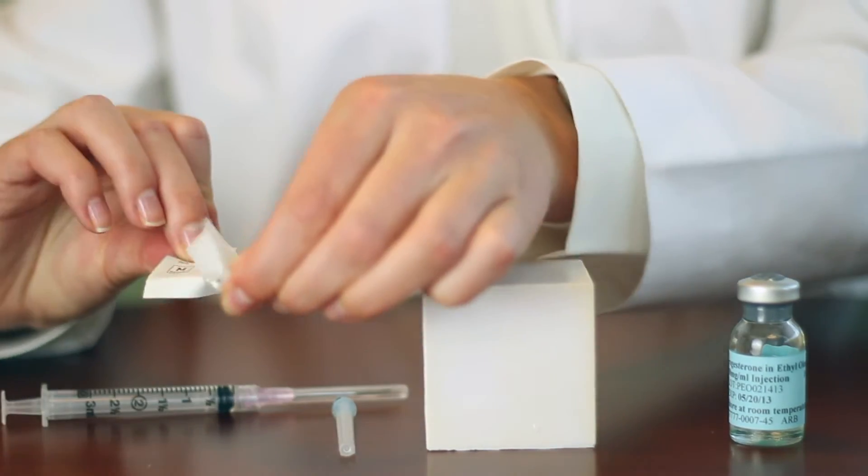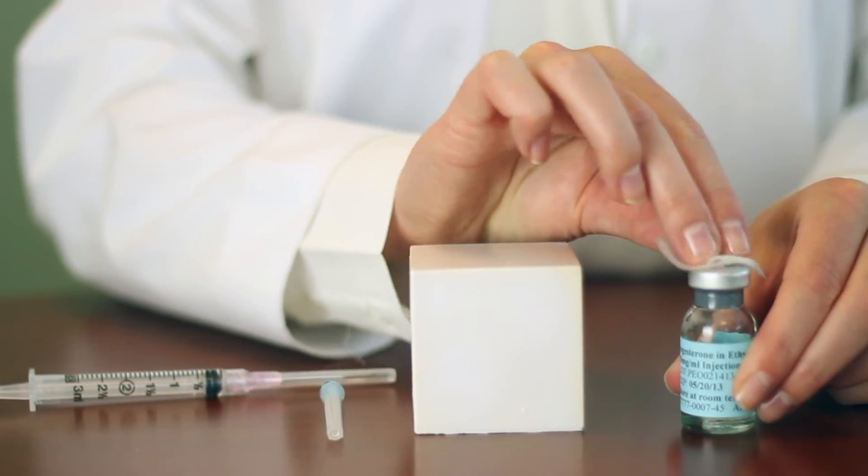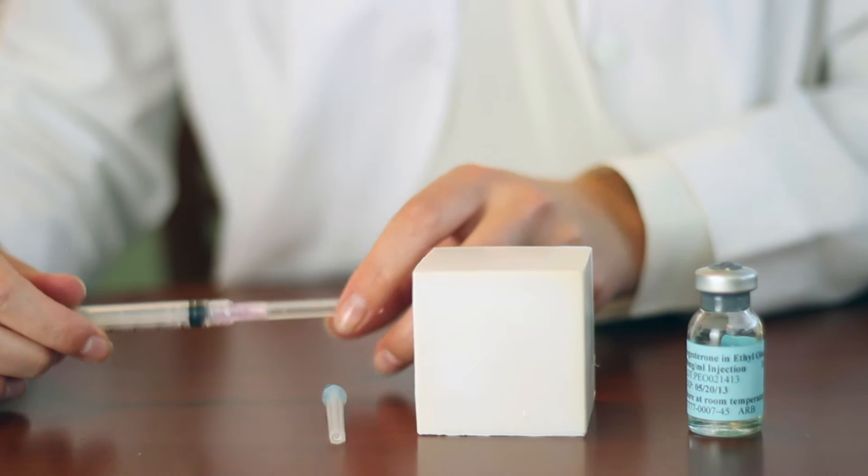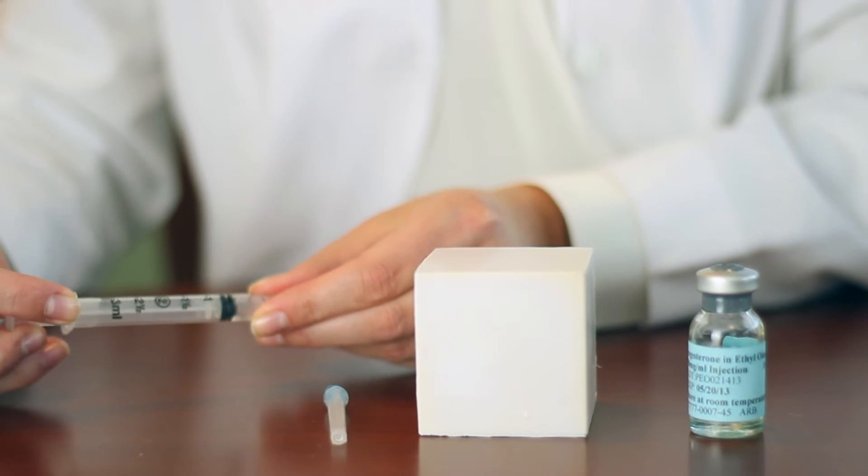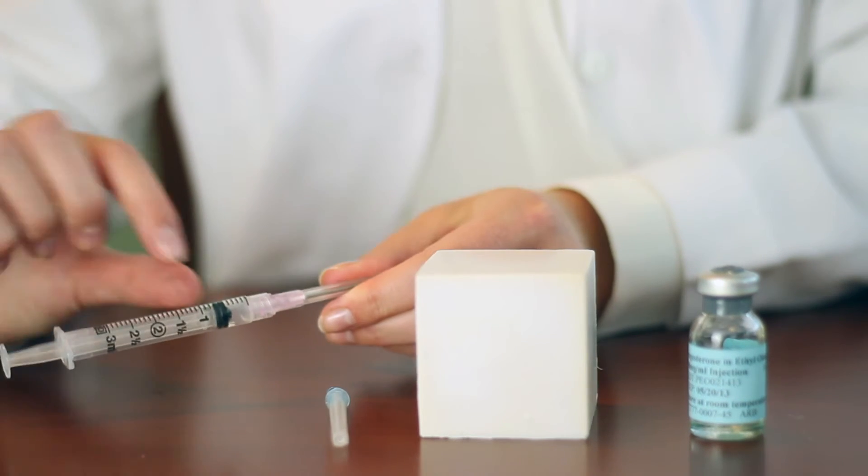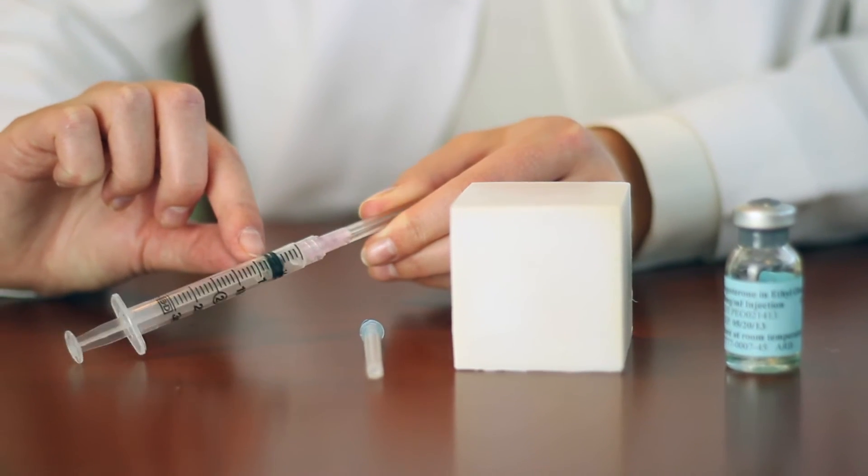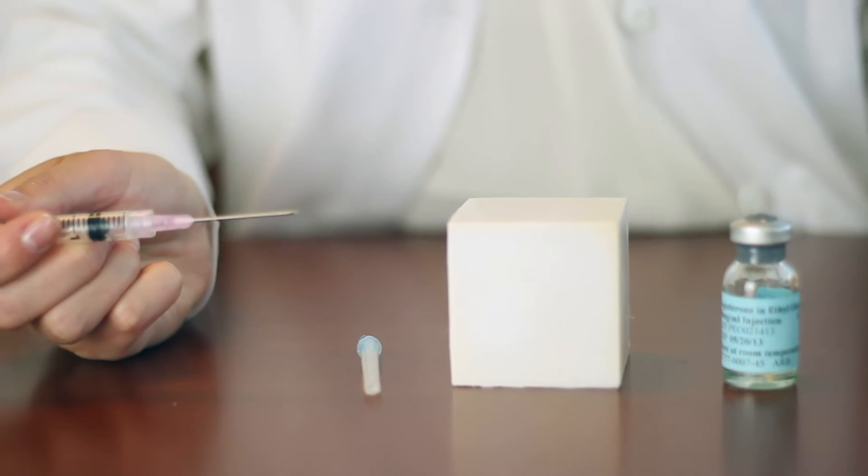Clean the top of the progesterone vial with an alcohol swab. Draw down to your dose in air. The top of the black plunger will represent your dose. Pull the top straight off.